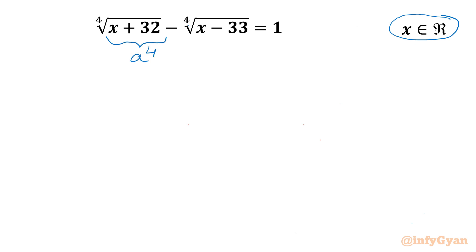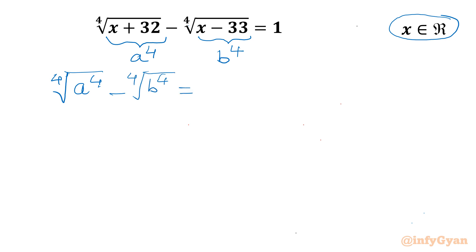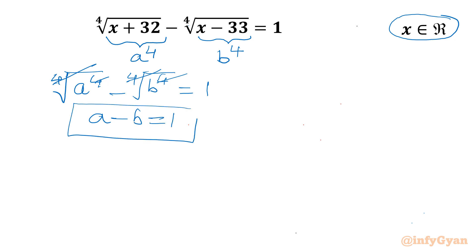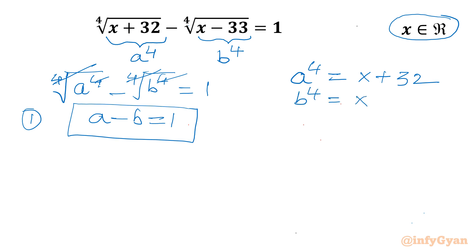We let the first radicand equal a⁴, so x+32 = a⁴, and the second radicand equal b⁴, so x-33 = b⁴. Writing the equation using these substitutions: the 4th root of a⁴ minus the 4th root of b⁴ equals 1, which simplifies to a - b = 1. This is equation number 1. For the second equation, we use the substitutions: a⁴ = x+32 and b⁴ = x-33.